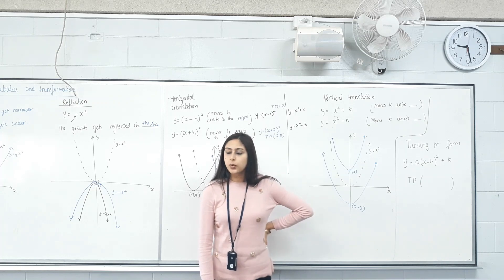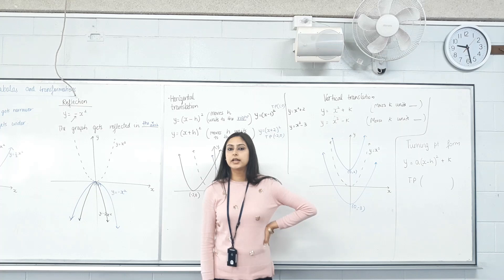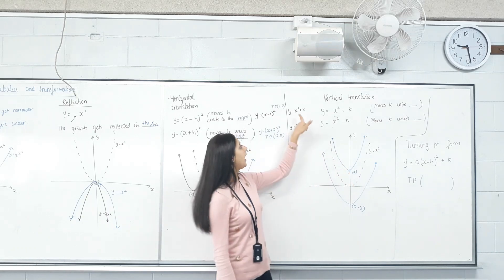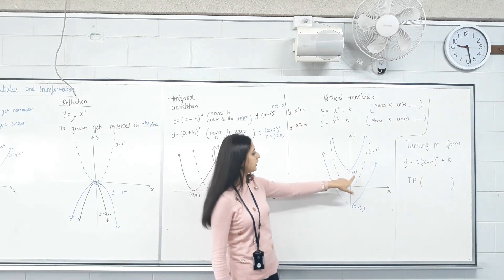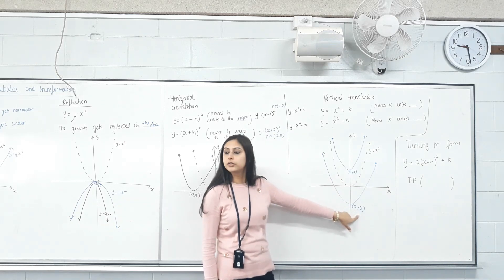So if we square the x and then add or subtract something, we get vertical translations. That means the graph didn't go right or left—it went up or down. If we added something, it went up. Can you see the turning point went up as well? If we subtracted something, the y-coordinate of the turning point went down as well.